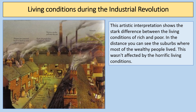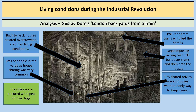On diagrams of the period you can see the cramped back-to-back houses and people having to live in close proximity to factories, with lots of factory pollution. Smoke led to what was sometimes known as 'pea-souper fogs' — the green smoke spread during the Industrial Revolution from burning coal. Gustav Doré's 'London Backyards from a Train' shows back-to-back houses creating overcrowded conditions, with house sharing very common, pollution from trains engulfing homes, large railway viaducts built over slums, and people having only tiny shared privies or wash houses to keep clean.